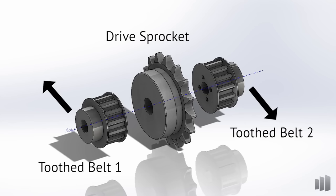In this first example, we have an application where we have two different tooth belt pulleys that need to be driven by a roller chain. These are going to be mounted to a common shaft and we want them to take up as little space as possible.